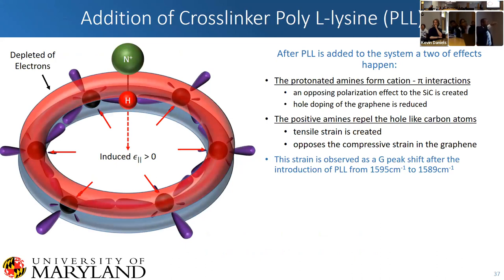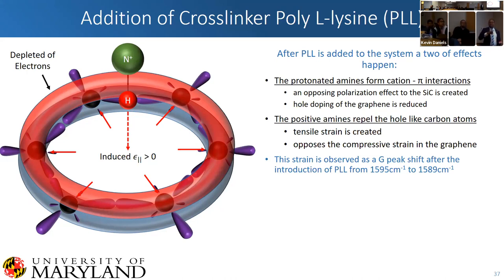When we add our poly-L-lysine to the system, we have two effects: the deprotonated or protonated amines form this cation-pi interaction across an entire 8×8 mm channel — or to put it on wafer scale, all across an entire wafer. These deprotonated amines and the cross-linker from our amines create an opposing polarization effect induced on our silicon carbide. So really we have these two polarization fields competing onto the graphene, resulting in a decent amount of strain. We actually see this when we put the poly-L-lysine on the quasi-freestanding epitaxial graphene — a four to six wavenumber shift as a result.